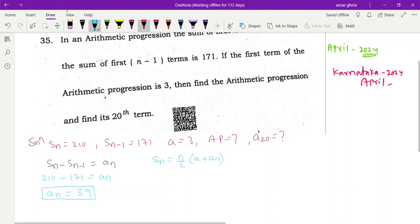Sn is equal to n by 2, a plus An, right? See to find, like you know AP, we need a and d. We have a, we don't have d. So if I use this formula a plus n minus 1 into d, I don't have n also, I don't have d.